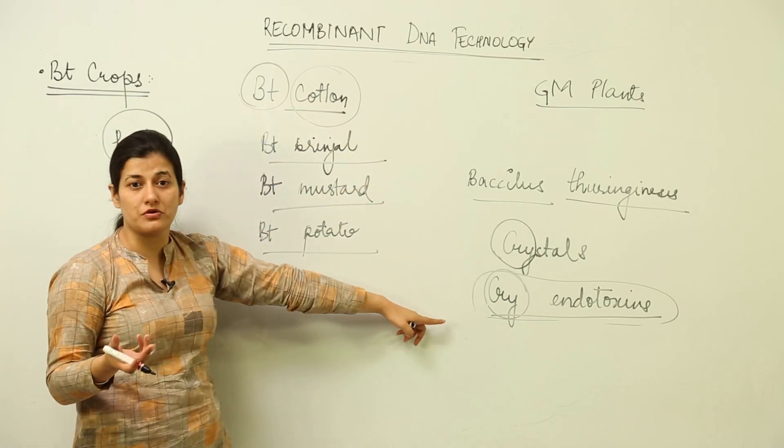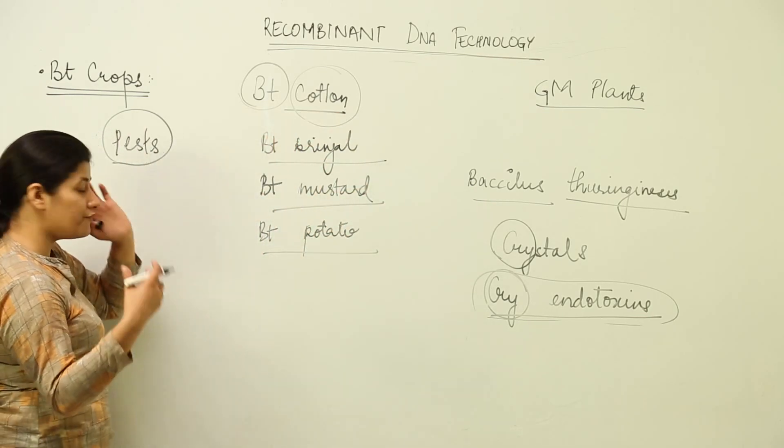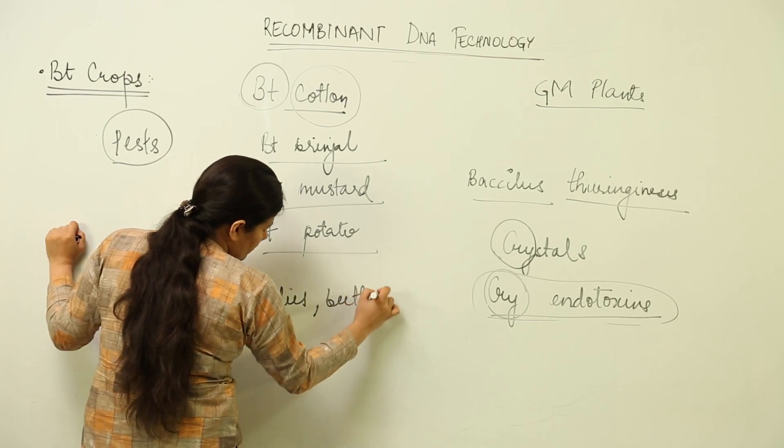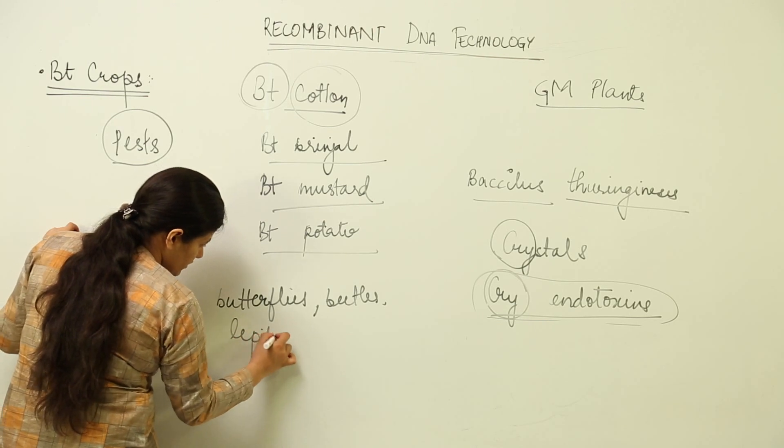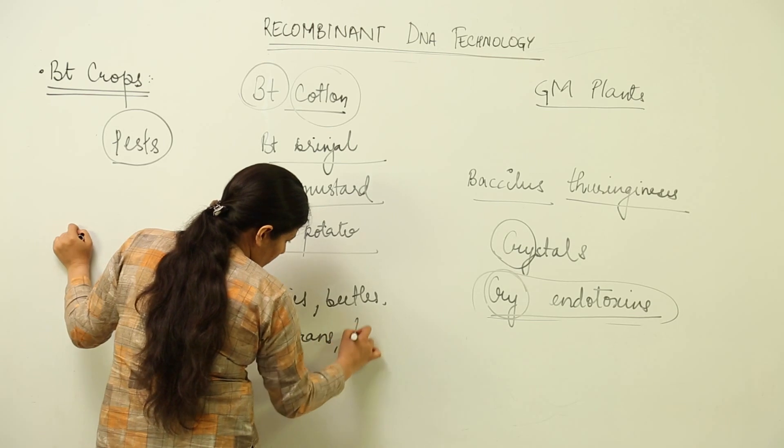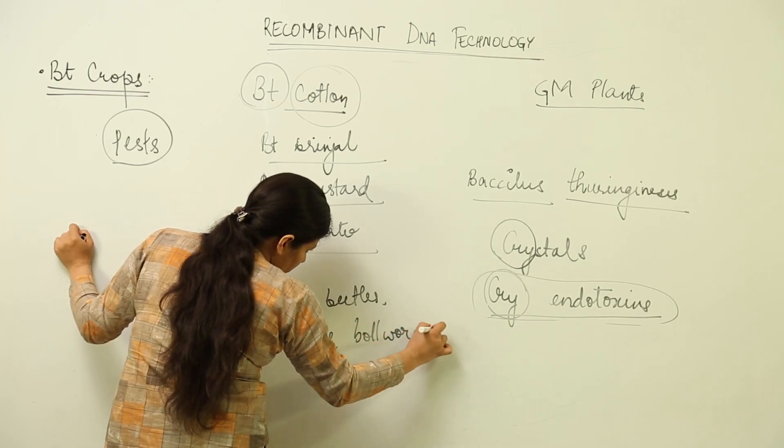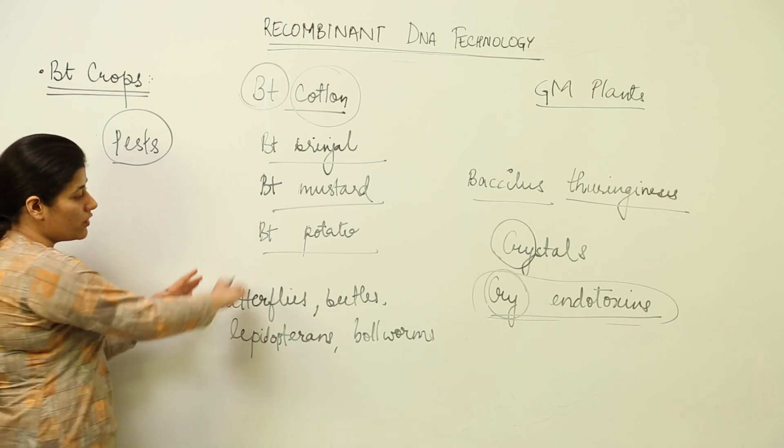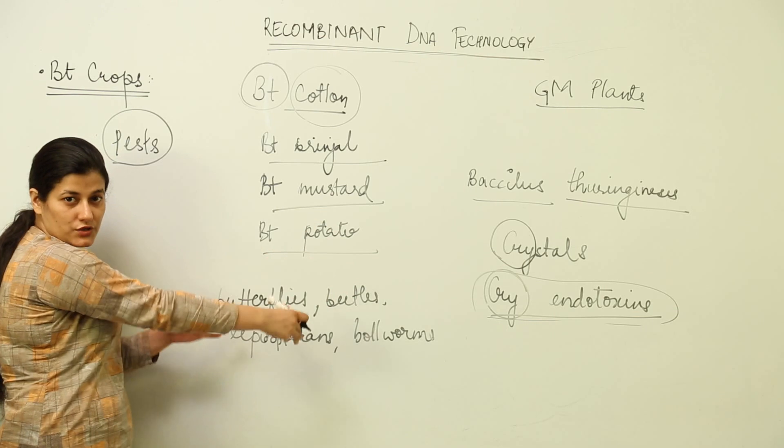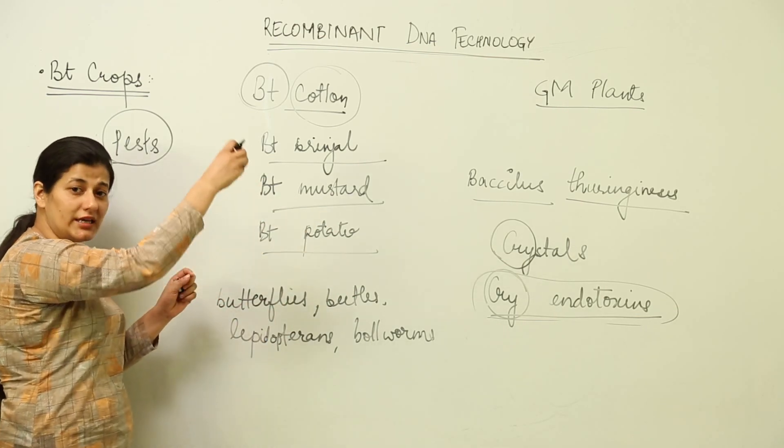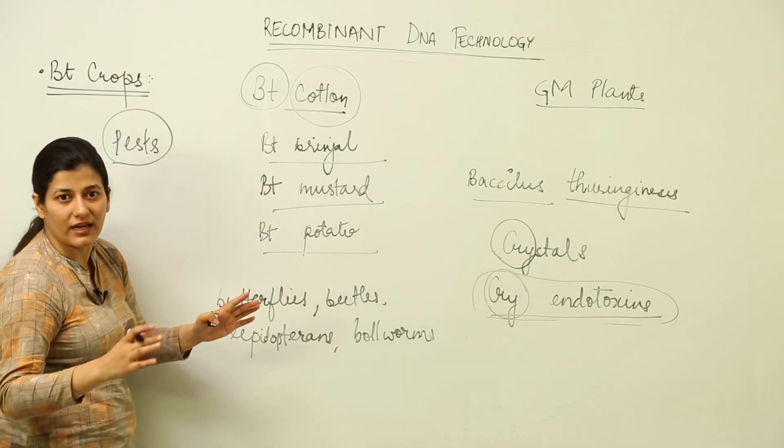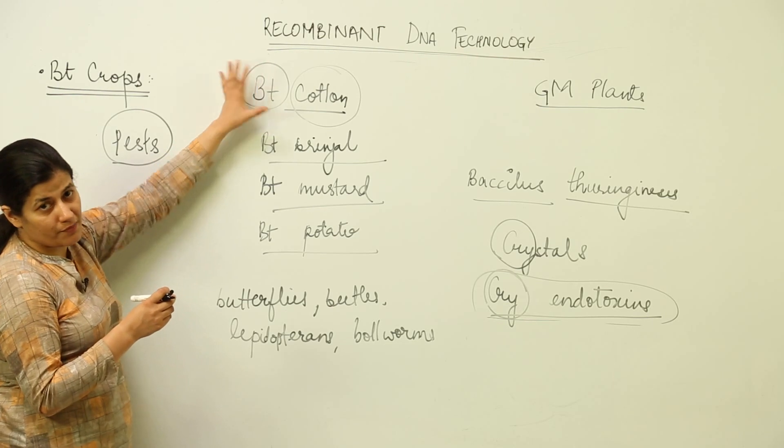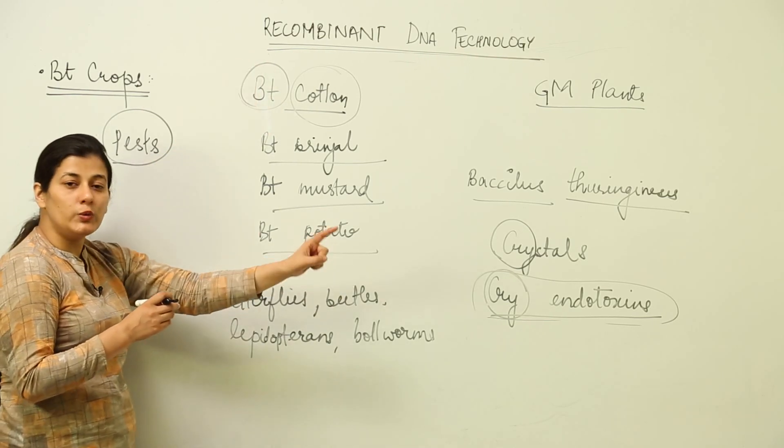This cotton is often infested by butterflies, beetles, lepidopteran insects, bollworms, corn borers, etc. These are the categories of insects which this cry endotoxin is going to target. They are going to eat it and that endotoxin will have effect on them. Other organisms that are part of the ecosystem are not going to be affected. Those insects or predators which directly affect the yield are targeted in particular using a gene which encodes for cry endotoxin.